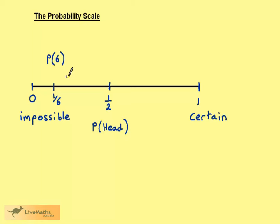It's worth noting that the probability scale goes from zero to one. When you're doing a question on probability, if you get an answer which is less than zero or more than one, then you've done something wrong and you should check your working.